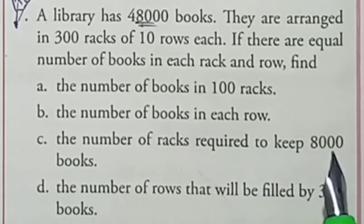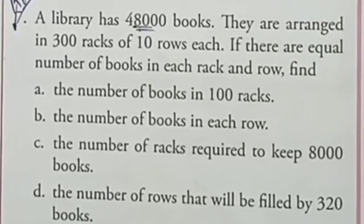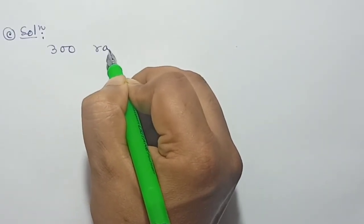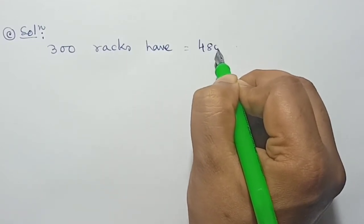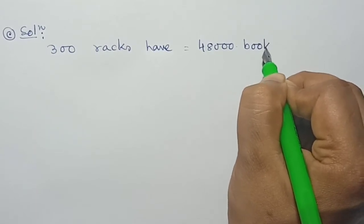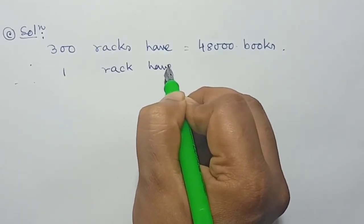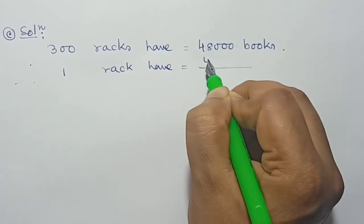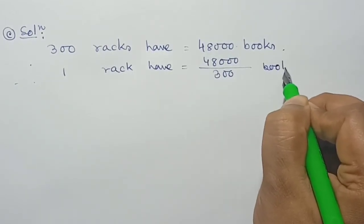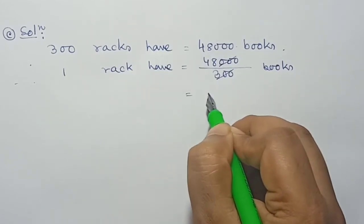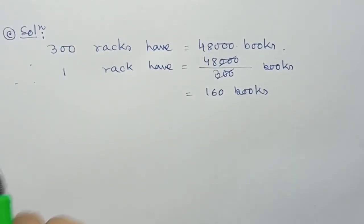Question C: the number of racks required to hold 8,000 books. We need to find how many racks are needed for 8,000 books. 300 racks have 48,000 books. Therefore, 1 rack has 48,000 divided by 300 books. Cancelling, 1 rack holds 160 books.